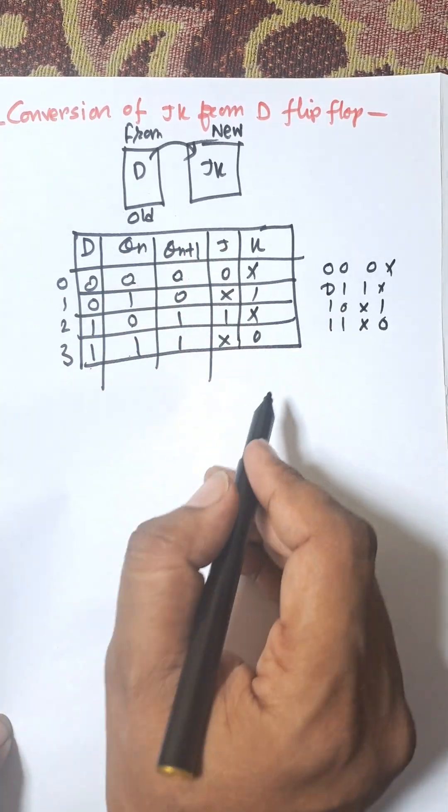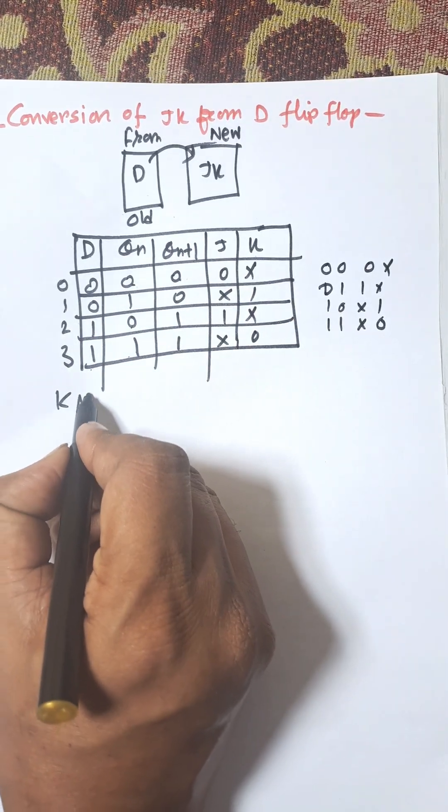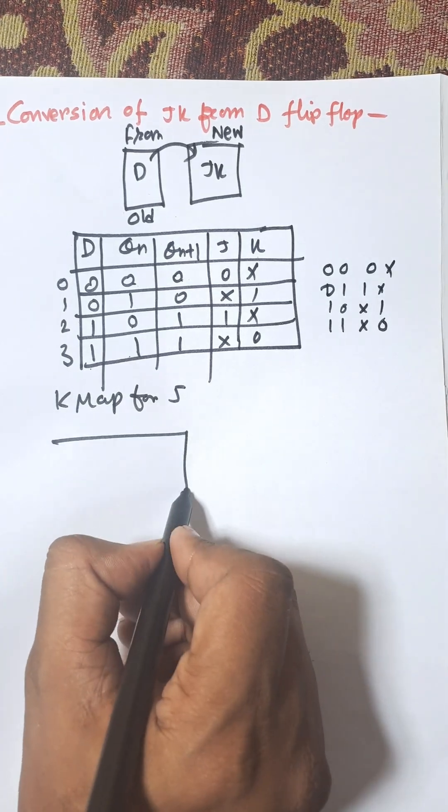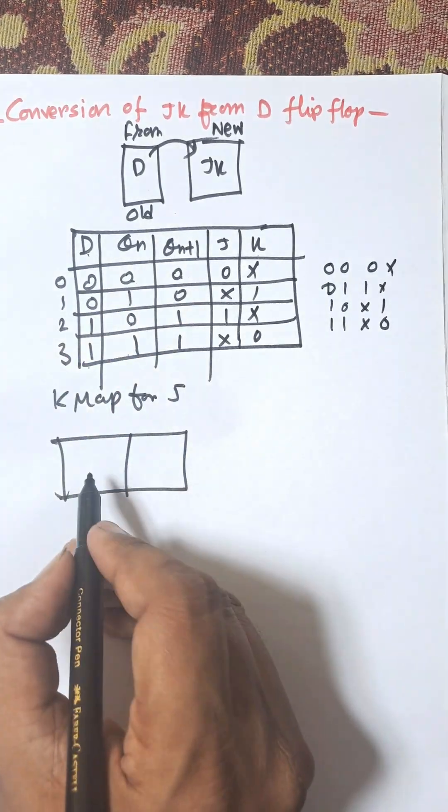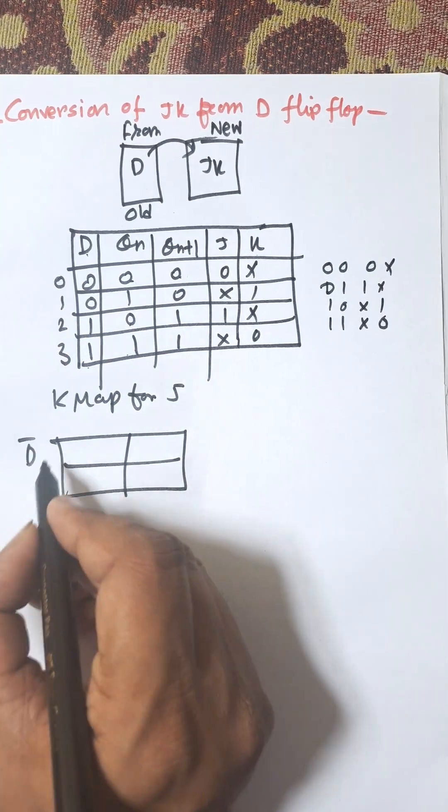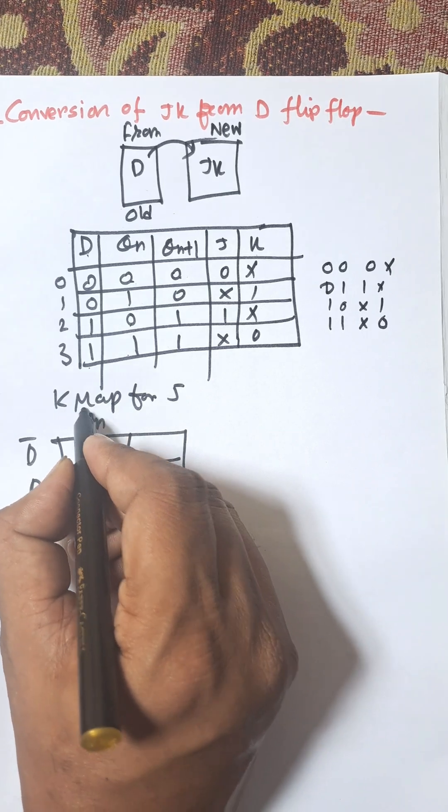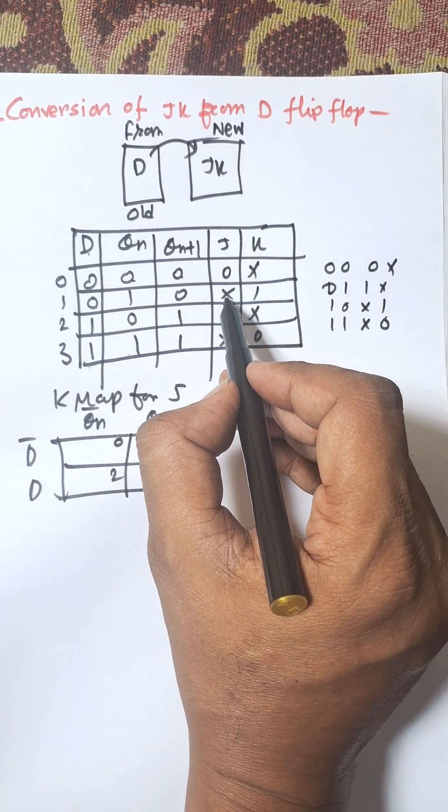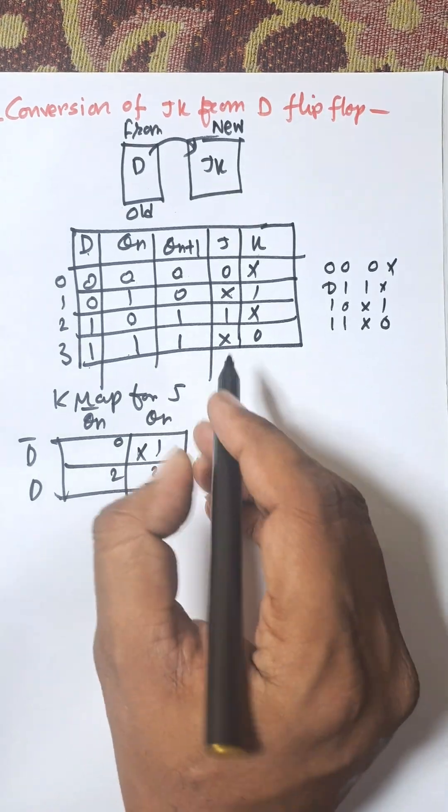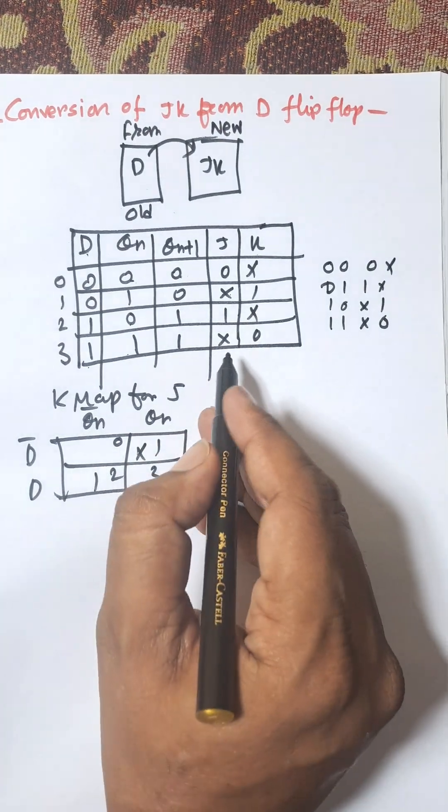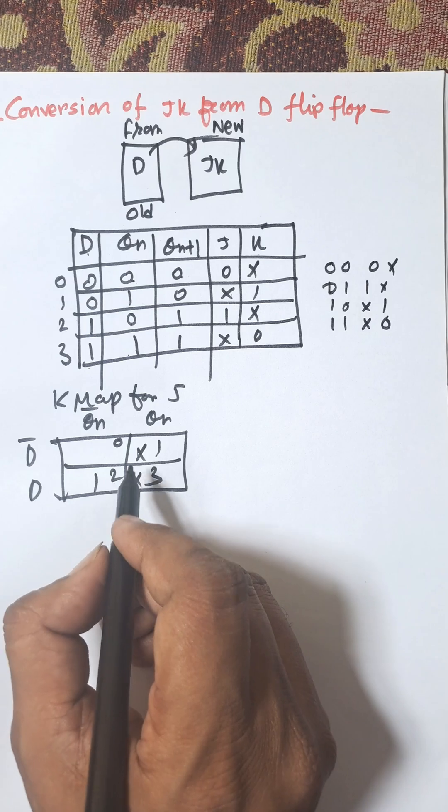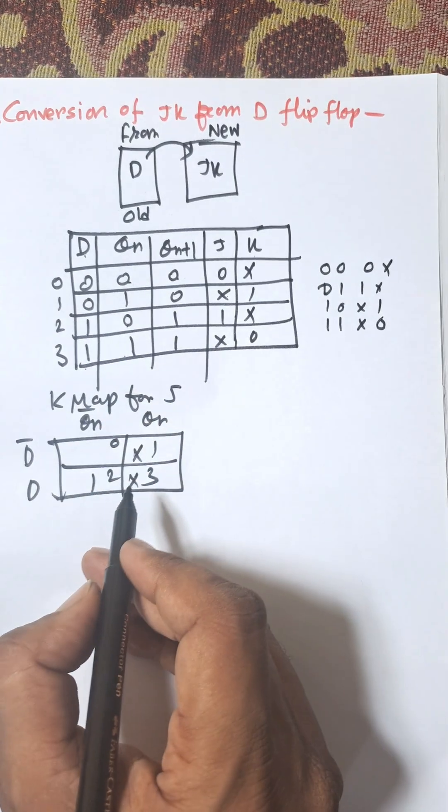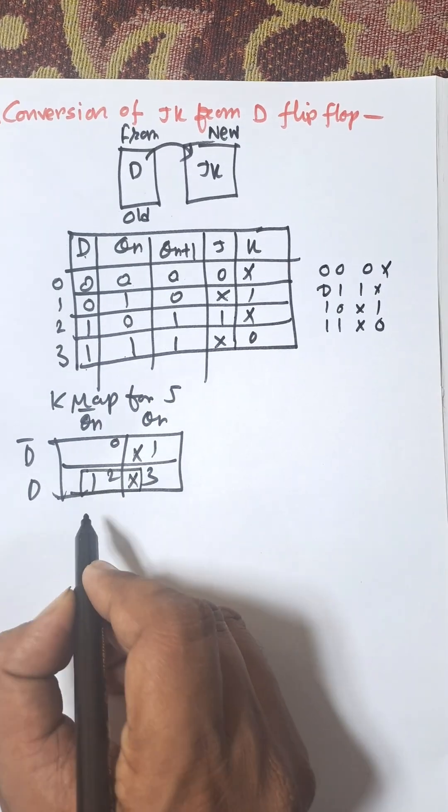Now we need to construct the K-map for J. K-map for J and inputs are D and Qn, that is D bar and D, Qn bar, Qn: 0, 1, 2, 3. Mean 1 position X, 2 position X, 2 position is 1 and 3 position is X. Grouping this one, we will get J equal to D.